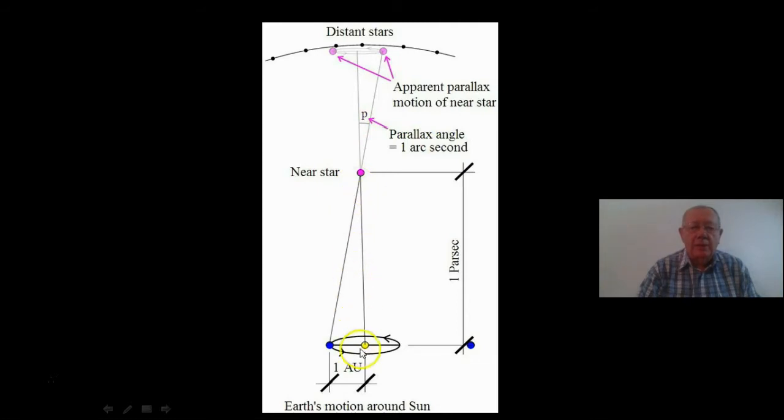And this angle here is a right angle, and this distance here is one astronomical unit, that defines a new unit that we have for distance, that is one parsec. So a parsec is a unit of distance. It's a very large unit of distance.